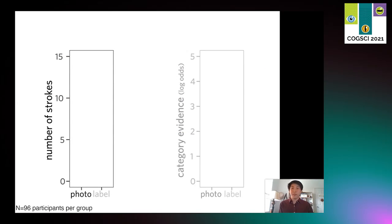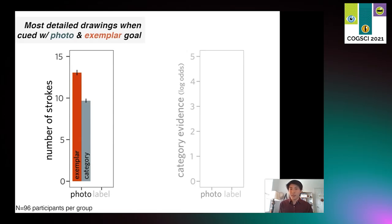Based on prior work by Fan and colleagues, we predicted that exemplar drawings would be more detailed than category drawings when participants were shown a photo cue. And indeed, this is what we found. Exemplar drawings reliably consisted of more pen strokes than category drawings, consistent with the prior work. New in our experiment were the matched label cue conditions, in which participants used slightly fewer strokes relative to the photo cue drawings; however, we found the same effect of representational goal in detail overall.